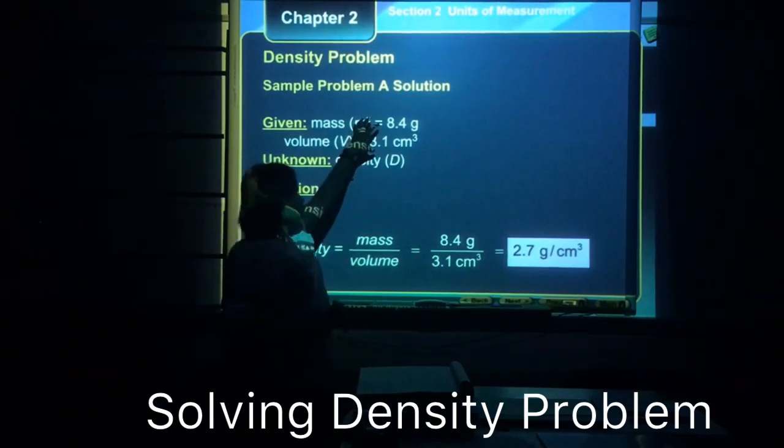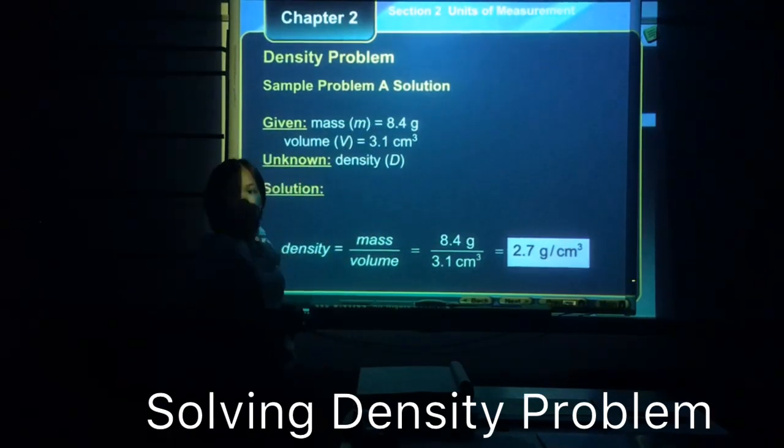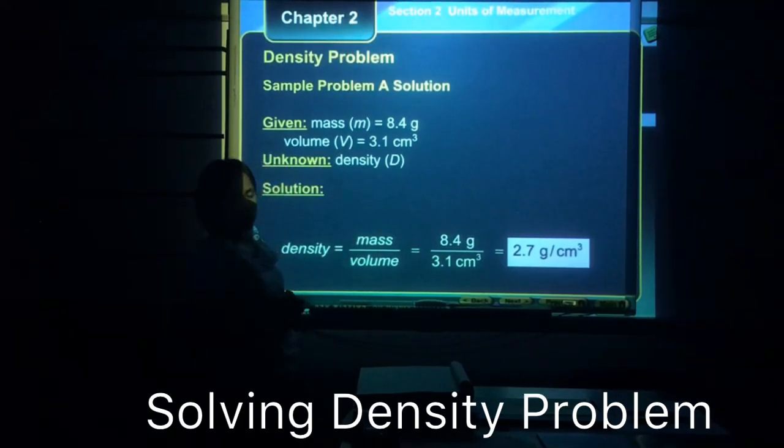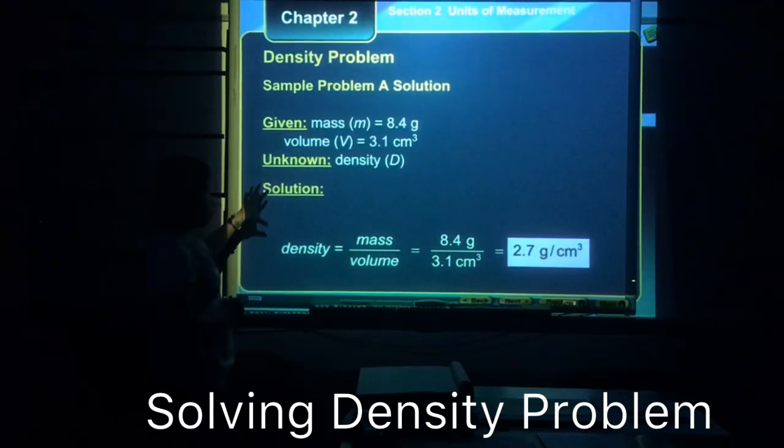So these two givens are taken from the problem. And so after putting all the given variables, let's now go to the unknown. So the unknown is the problem is asking you to solve for density. So density is abbreviated as letter D. And after getting the unknown, we know that we can now solve the problem because we know what we're supposed to solve and what are the given variables.